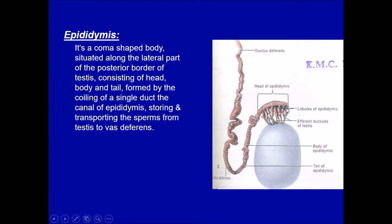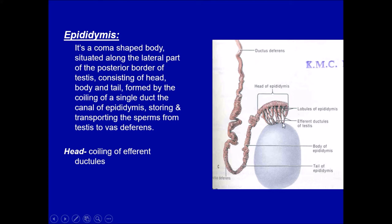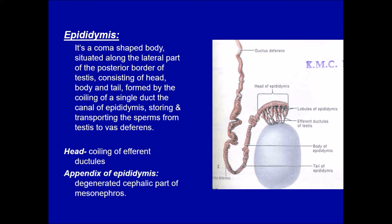The epididymis is where final maturation of sperms takes place; they are stored here until pushed into the vas deferens, from where they are ejaculated. The head can be identified by the efferent ductules coming from the testis and draining sperms into the head. The appendices of the epididymis — degenerated remnants of the mesonephros — are also visible here.